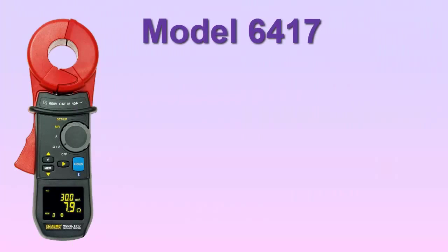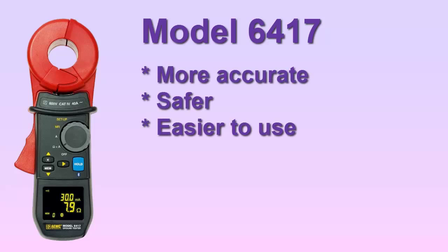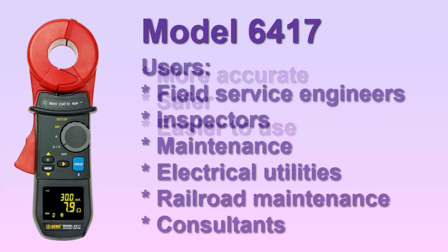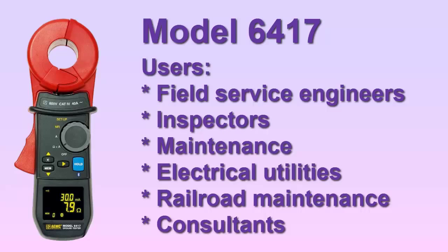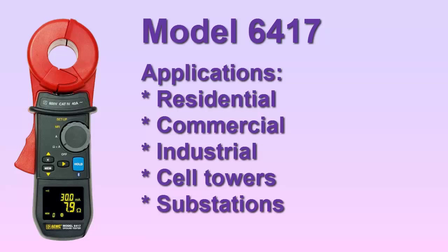The Model 6417 is specifically designed to improve measurement accuracy, user safety, and operator ease of use. Users include field service engineers and technicians, inspection personnel, facility maintenance electricians, electrical utility staff, railroad maintenance engineers, and consultants. Typical applications include checking the grounding electrode system for residential, commercial, industrial, and other facilities, as well as cell towers and small substations.